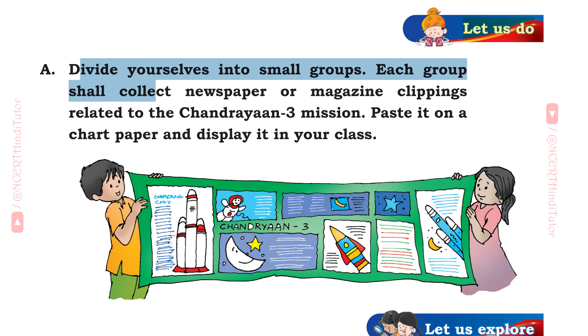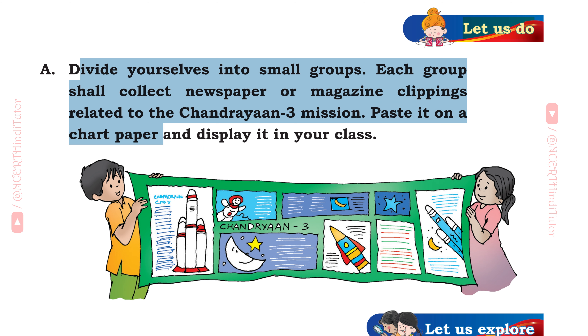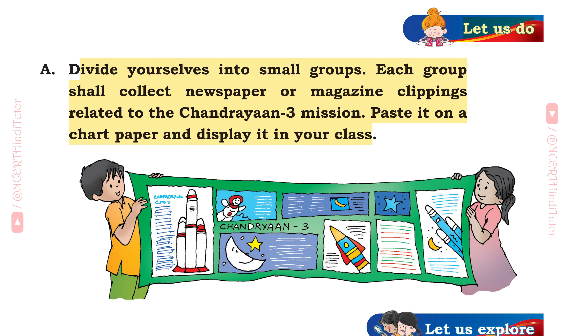Let us do: Divide yourselves into small groups. Each group shall collect newspaper or magazine clippings related to the Chandrayaan 3 mission. Paste it on a chart paper and display it in your class. You have to do it yourself as shown in the picture.